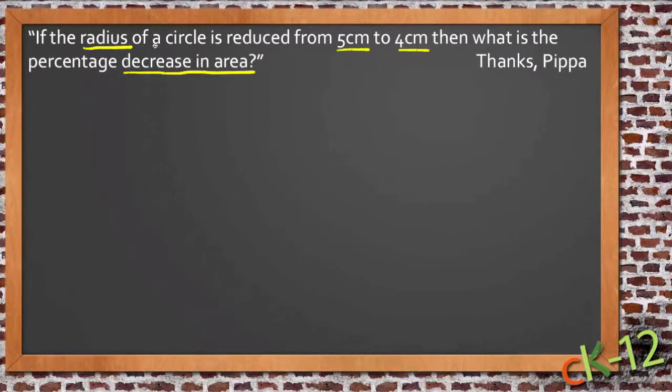We aren't going to compare the radius directly. So first, let's find the area of each of these circles. Now, the area of a circle, I'm sure you've heard before, is pi r squared.